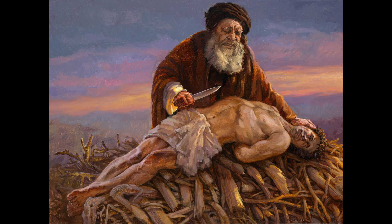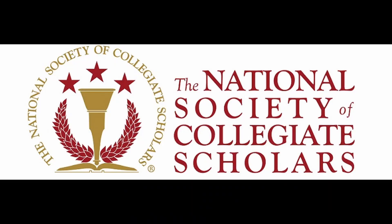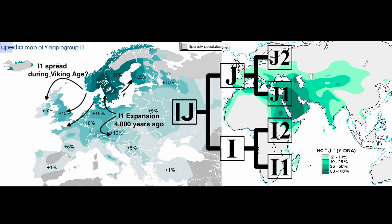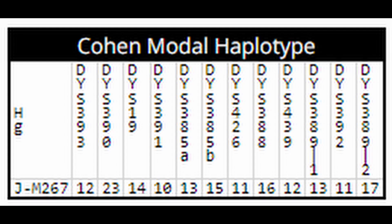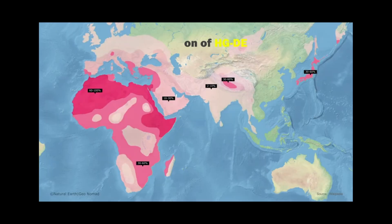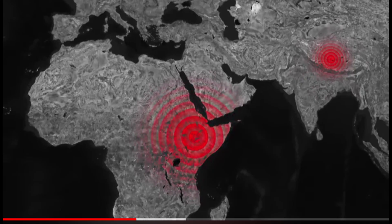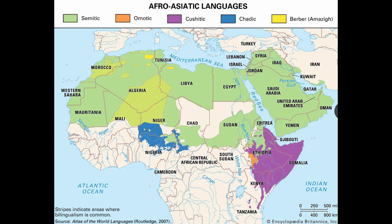We can't say for certain which haplogroup Abraham represents in the modern population of people. The majority of the academic community is leaning towards the probability of IJ, especially due to the research into the Cohen CMH factors. There are some who support haplogroup DE as the original Semites, and are able to make their case citing Natufians and Hebrew having an Afro-Asiatic root.